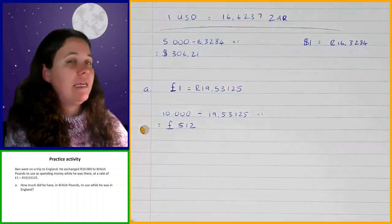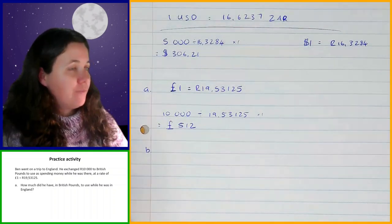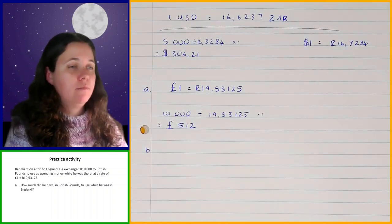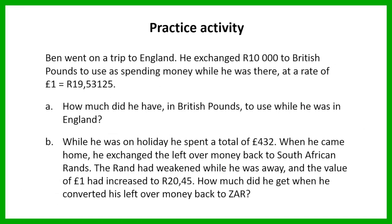So that is how much he has in pounds when he goes to England. Question b, while he was on holiday he spent a total of 432 pounds. When he came home, he exchanged the leftover money back to South African rand. The rand had weakened while he was away, and the value of one pound had increased to 20 rand 45. How much did he get when he converted his leftover money back to South African rands? I'm going to give you one minute to work this out.